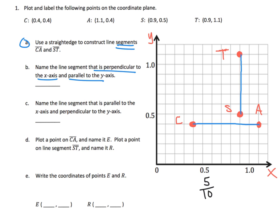And let's do D. Plot a point on CA and name it E. Okay, so I will plot a point right there. I just plotted a point. I will name it E. And then it says plot a point on the line segment ST and name it R. Sure. There's my point, and I will name it R.